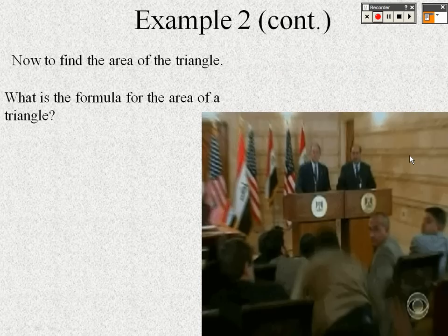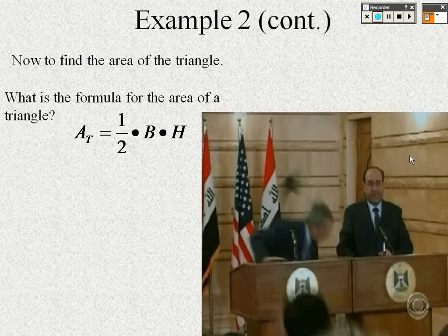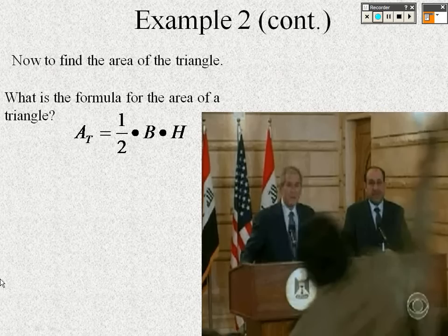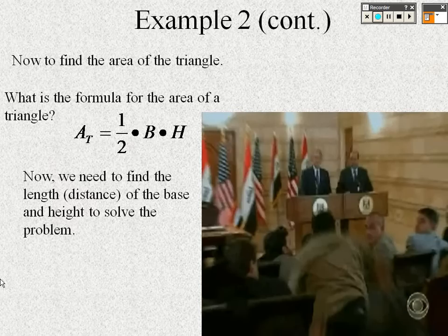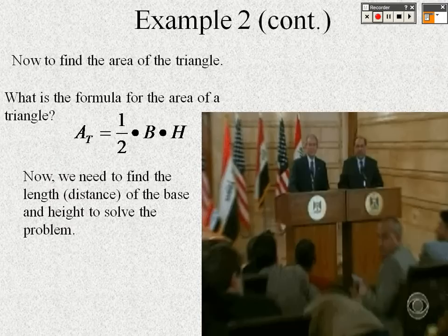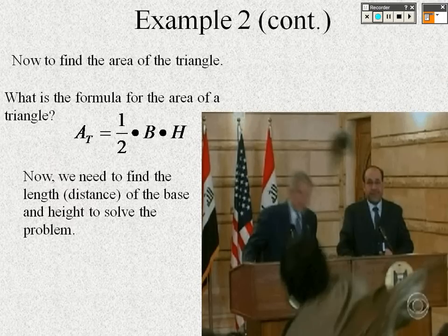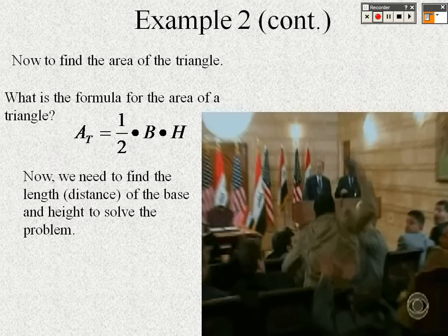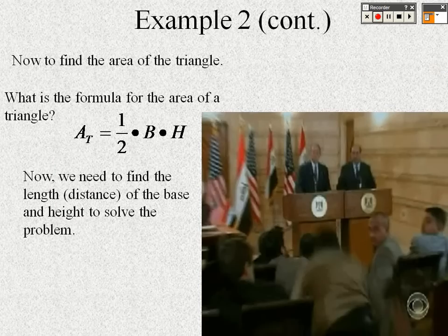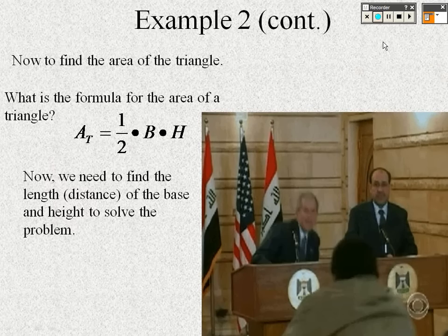Now we want to find the area of the triangle. The formula for area is one-half times the base times the height. To find the area, we need to find the distances of the relevant sides using the distance formula, which we will work through next.